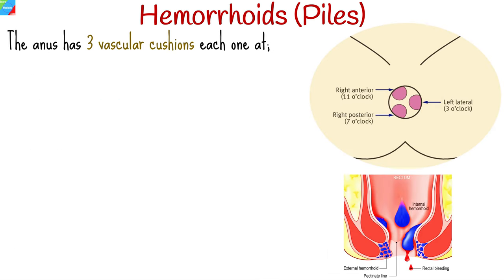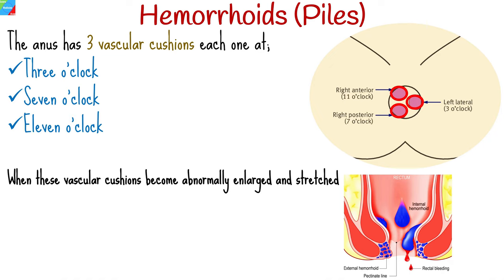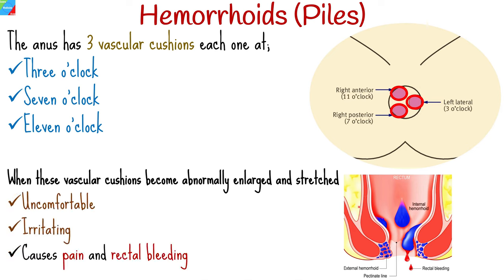The anus has three vascular cushions: one at 3 o'clock, one at 7 o'clock, and one at 11 o'clock. When these vascular cushions become abnormally enlarged and stretched, they can become uncomfortable, irritating, and sometimes pathological, causing pain and rectal bleeding.